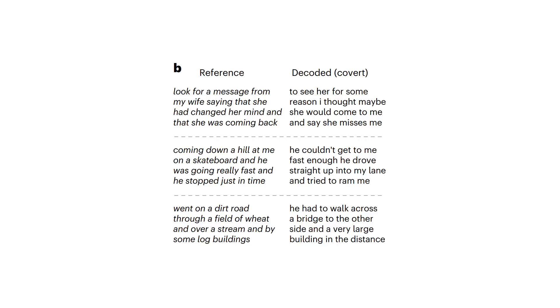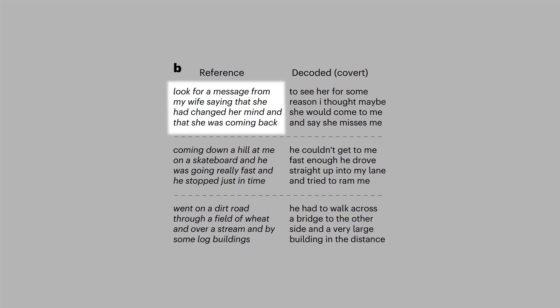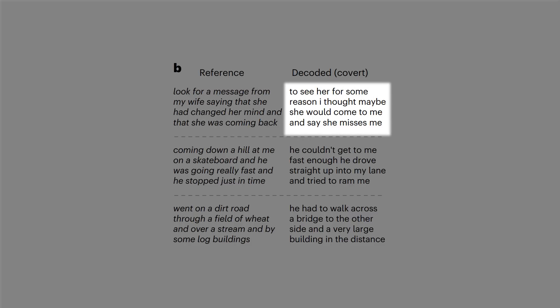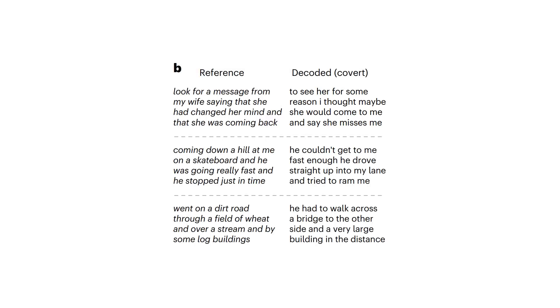Okay, but that's while hearing the audio of someone else telling a story. It also works when people come up with their own stories and imagine telling it with their internal monologue. For example, where one of the participants wrote down afterwards that their story was, look for a message from my wife saying that she had changed her mind and that she was coming back. What the AI decoded in the moment was, to see her for some reason, I thought maybe she would come to me and say she misses me. Once again, not completely on point, but it's getting somewhere. Orwell's been real quiet since this paper dropped.